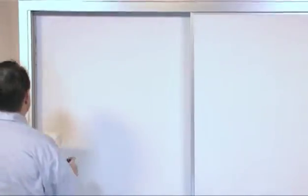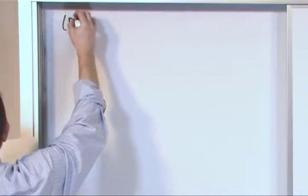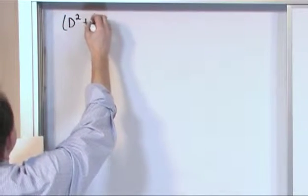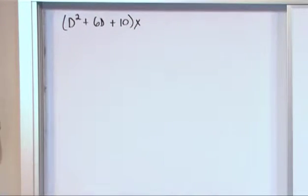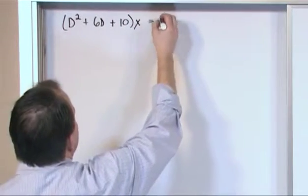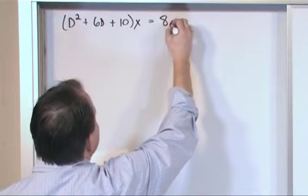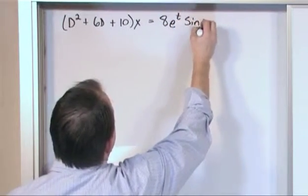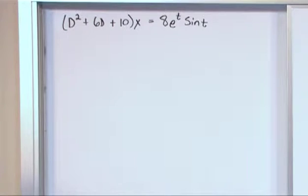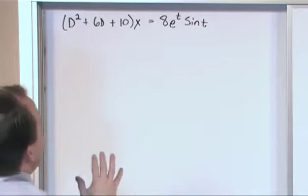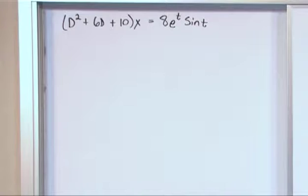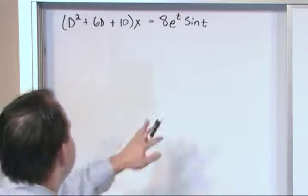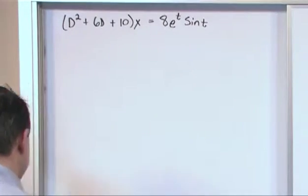It doesn't look really any harder than anything we've done. So you have a second order differential equation, d squared plus 6d plus 10 operating on our function x of t equals 80 times e to the t times the sine of t. The first thing we notice is the left hand operator is a little more complicated than what we've typically been using, and the right hand side forcing function is quite a bit more complicated than what we've had so far, but still it looks pretty comfortable, familiar, so we'll be able to handle it.